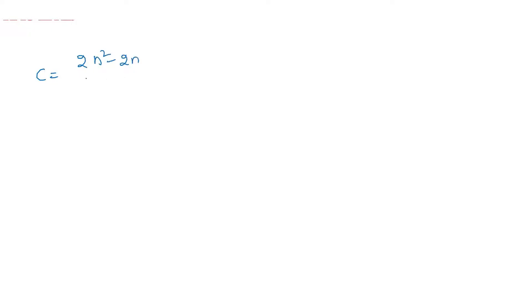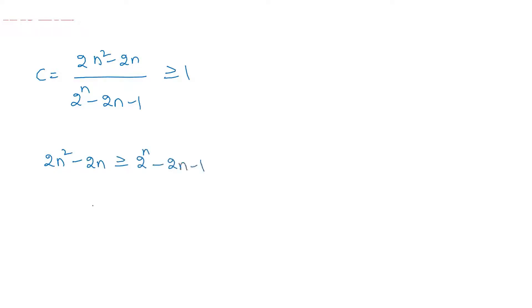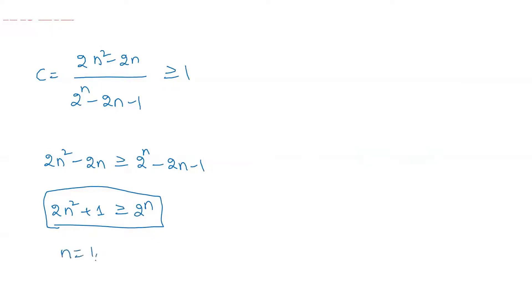Since c ≥ 1, we need 2n² − 2n ≥ 2^n − 2n − 1, which rearranges to 2n² + 1 ≥ 2^n. Since n is a positive integer (number of terms), checking values shows this condition holds for n = 1, 2, 3, 4, 5, and 6, but fails for n = 7 or more.